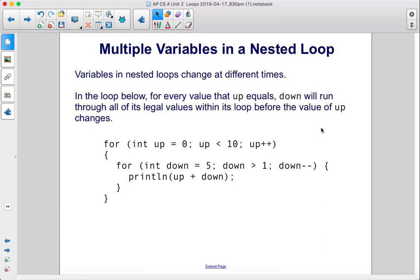Variables in nested loops change at different times. In the loop below, for every value that up equals, down will run through all of its legal values within its loop before the value of up changes.